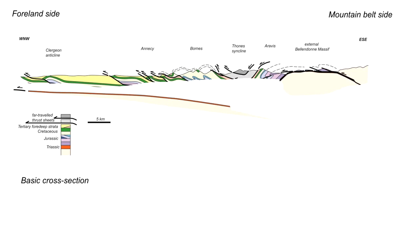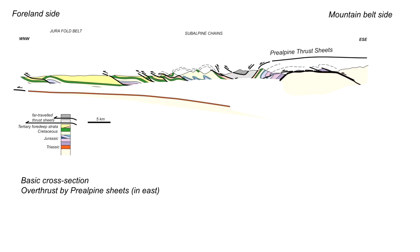The near-surface geology is compiled onto the cross-section based on the outcrop pattern. The left-hand side, part of the Jura fold belt, shows a dark green Cretaceous marker coming up to outcrop in a couple of places, overlaid by foredeep sediments of largely Miocene age. Moving into the subalpine chains in the center, Jurassic rocks come to outcrop and the dark green Cretaceous marker is largely eroded away. Crossing a structure called the Tonе Sink line, we reach basement rocks on the eastern side, once overlaid by far-traveled thrust sheets preserved in the Tonе Sink line as a klippe.